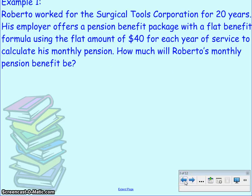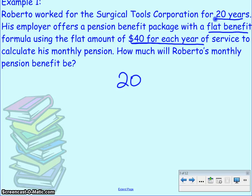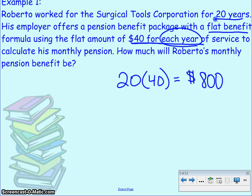Looking at our first example, Roberto worked for Surgical Tools Corporation for 20 years. His employer offers a pension benefit package with a flat benefit formula using the flat amount of $40 for each year of service to calculate his monthly pension. He was with the company for 20 years and for each year he was there he gets $40, so his monthly pension check is going to be $800.